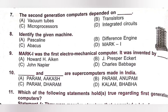Question 8: Identify the given machine. A. Pascaline, B. Difference Engine, C. Abacus, D. Mark 1. A Difference Engine is an automatic mechanical calculator designed by Charles Babbage. Option B is the correct answer.